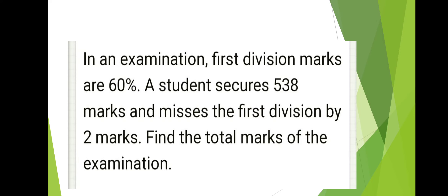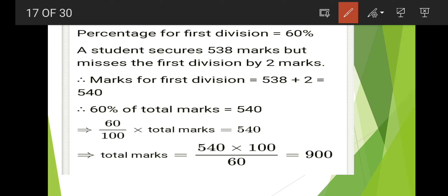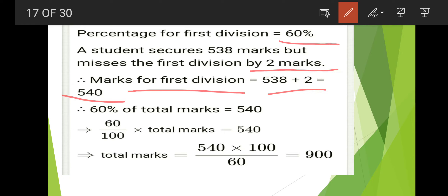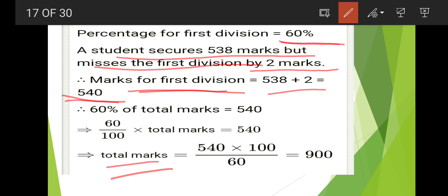Next: in an examination, first division marks are 60 percent. A student secures 538 marks and misses the first division by 2 marks. Find the total marks. The marks for first division will be 538 plus 2 equals 540. So 60 percent of total marks equals 540. Therefore 60 by 100 of total marks equals 540, and solving gives total marks equal to 900.